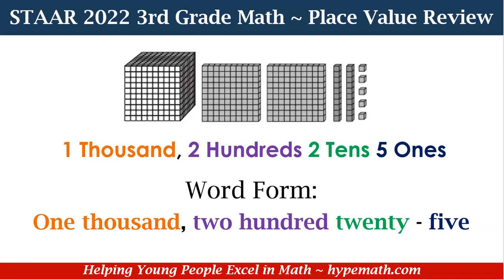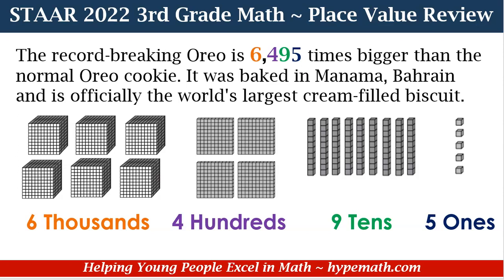Let's look at another example. The word problem says the record-breaking Oreo is 6,495 times bigger than a normal Oreo cookie — that is a humongous cookie! It was baked in Manama, Bahrain and is officially the world's largest cream-filled biscuit. We're going to take our number, which is 6,495. We show it represented in block form and also number and word form. For the block form, we have six 1,000 blocks, 400 blocks, nine tens blocks, and five ones blocks. In number and word form: six 1,000s, 400s, nine tens, five ones.